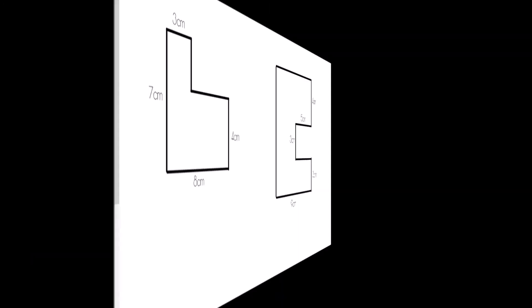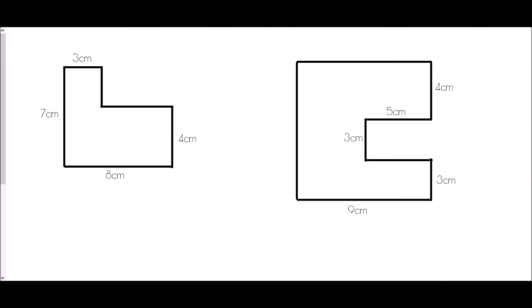We're going to end with what are known as compound shapes — shapes made from more than one shape put together — and we'll find the perimeter given the information we already have. The key is we must know all of the lengths of all of the sides. We've been told the base of this shape is eight centimeters and this little piece is three centimeters.